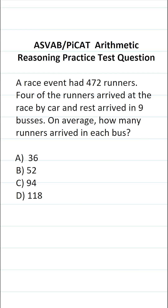This arithmetic reasoning practice test question for the ASVAB and PSYCAT says: a race event had 472 runners. Four of the runners arrived at the race by car, and the rest arrived in nine buses. On average, how many runners arrived in each bus?